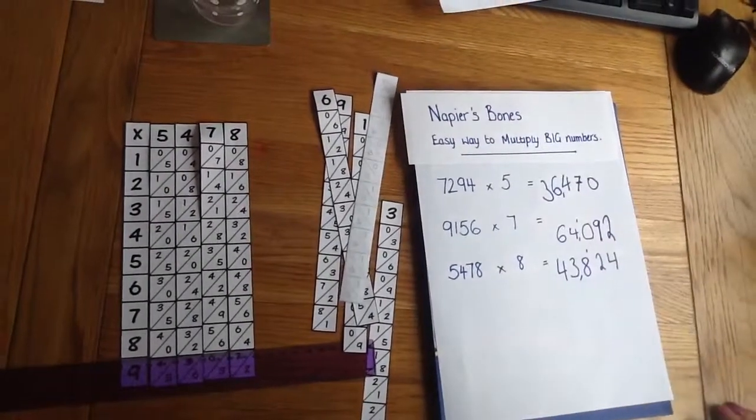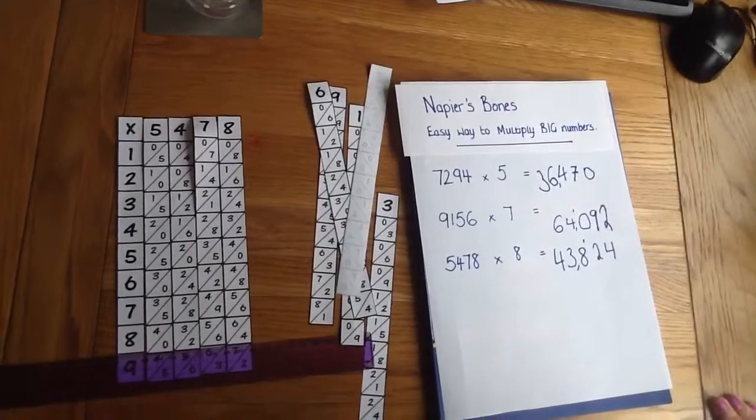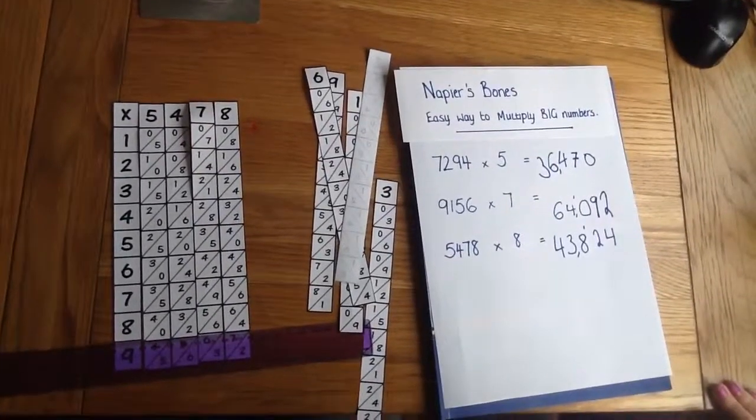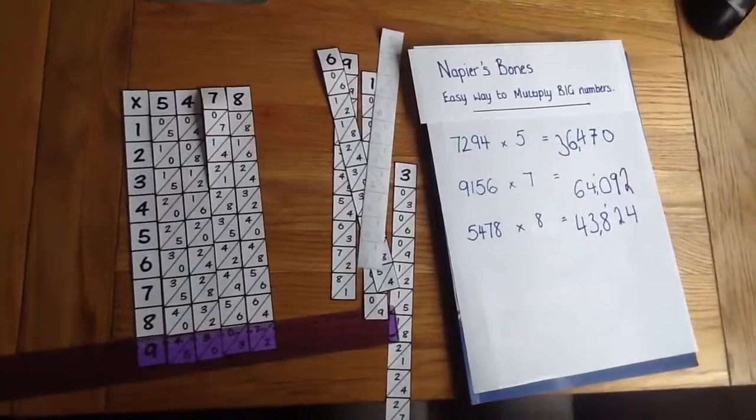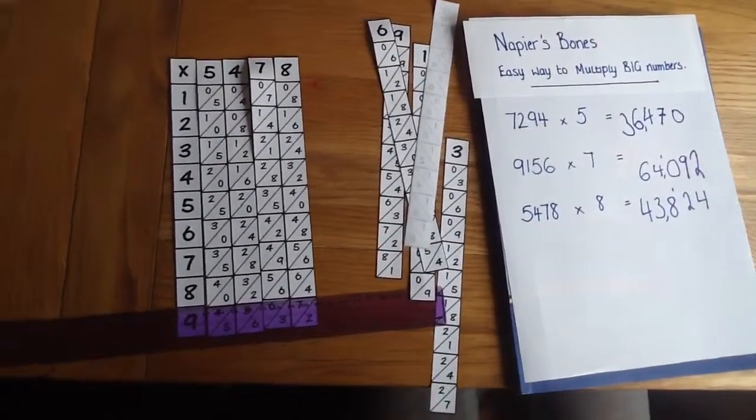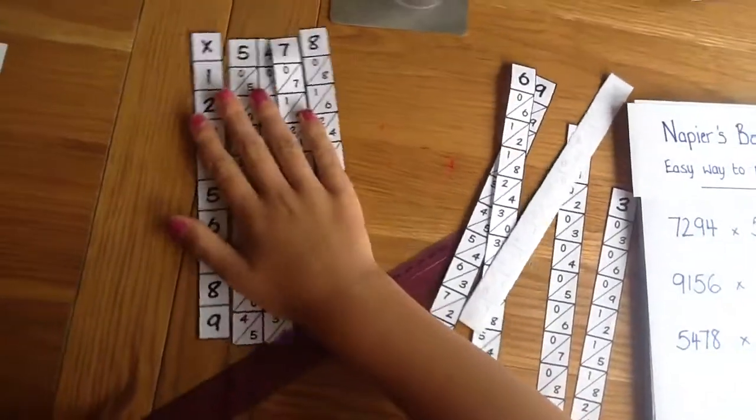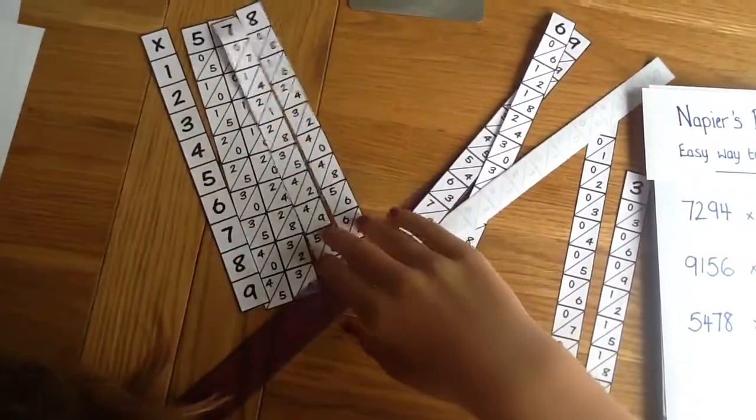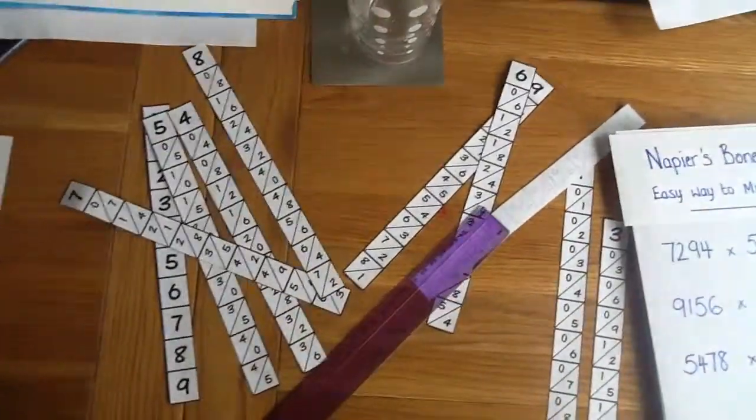So 5,478 times 8 is 43,824. So we hope that really makes sense to you. I'll upload the Napier's bones onto Facebook so you can find those on there. And then you'll be able to print them off.